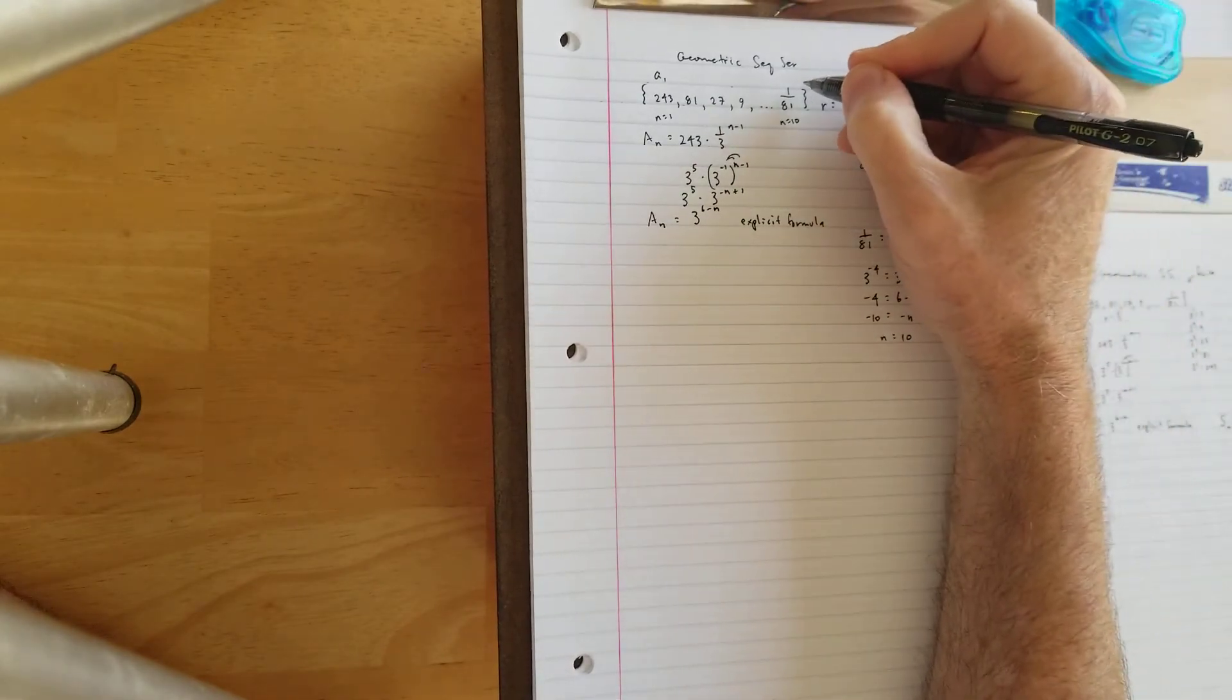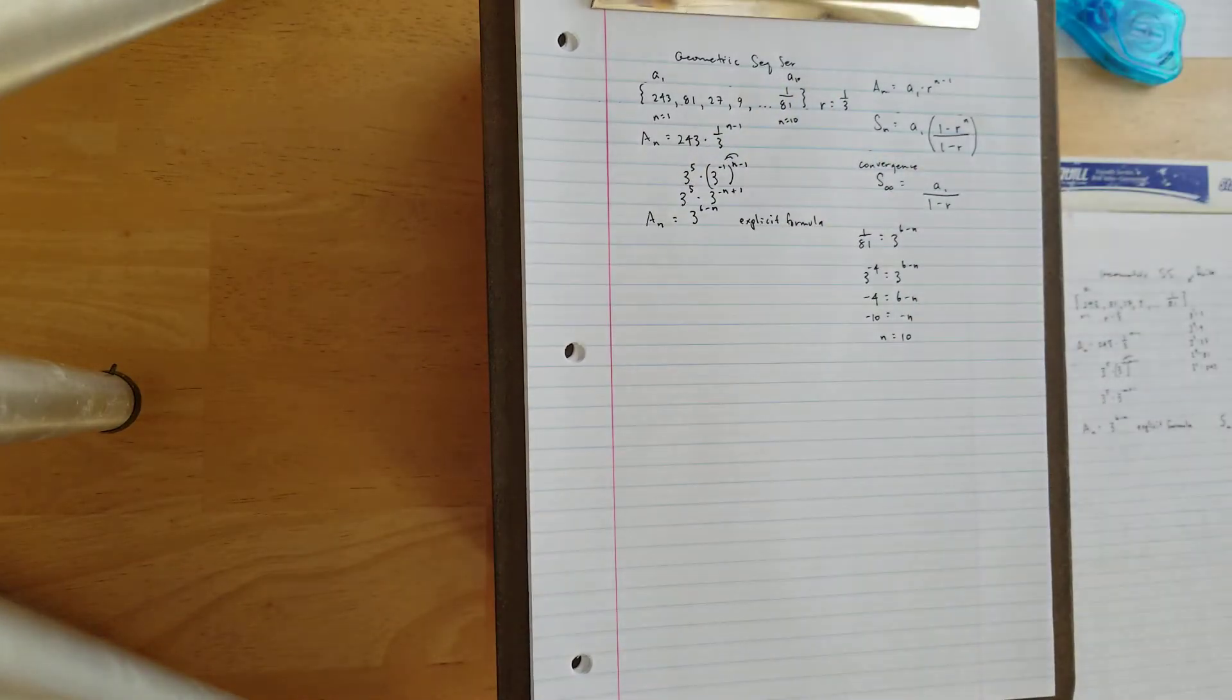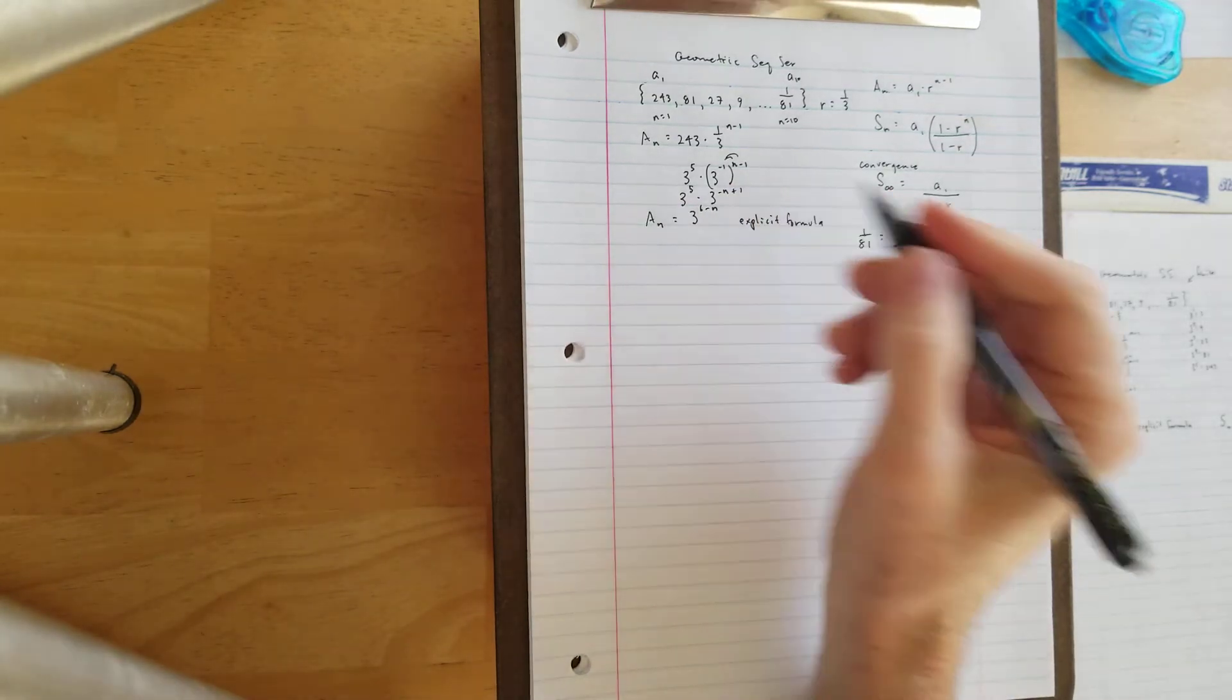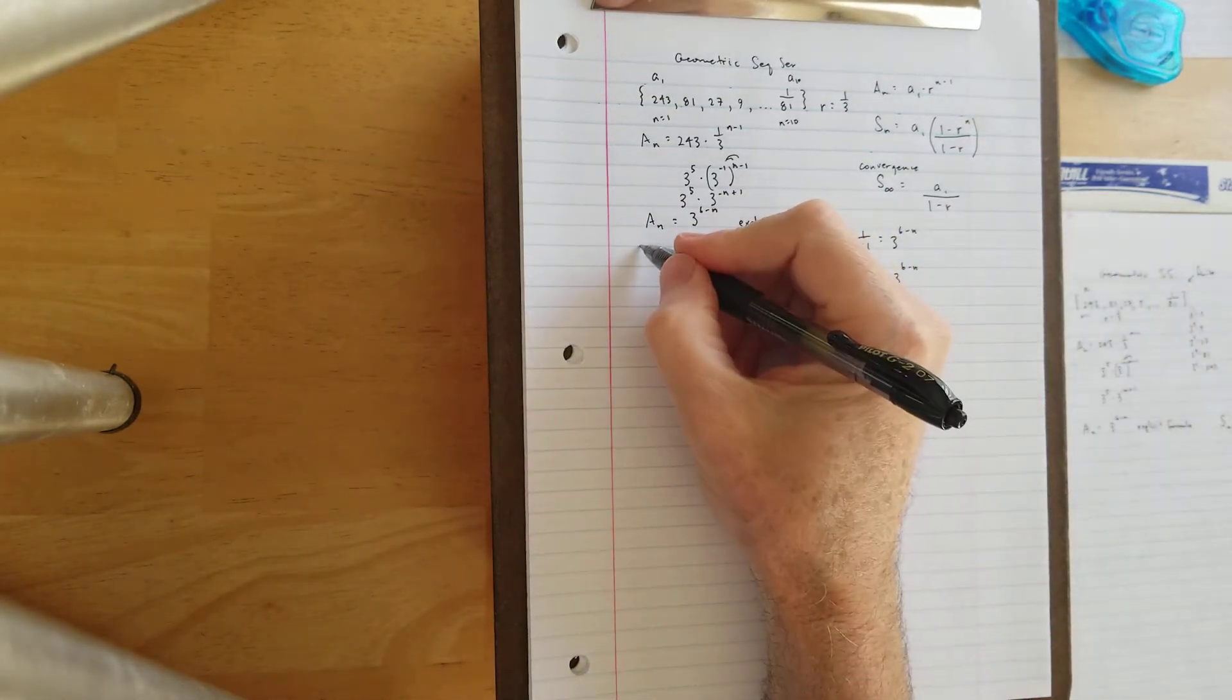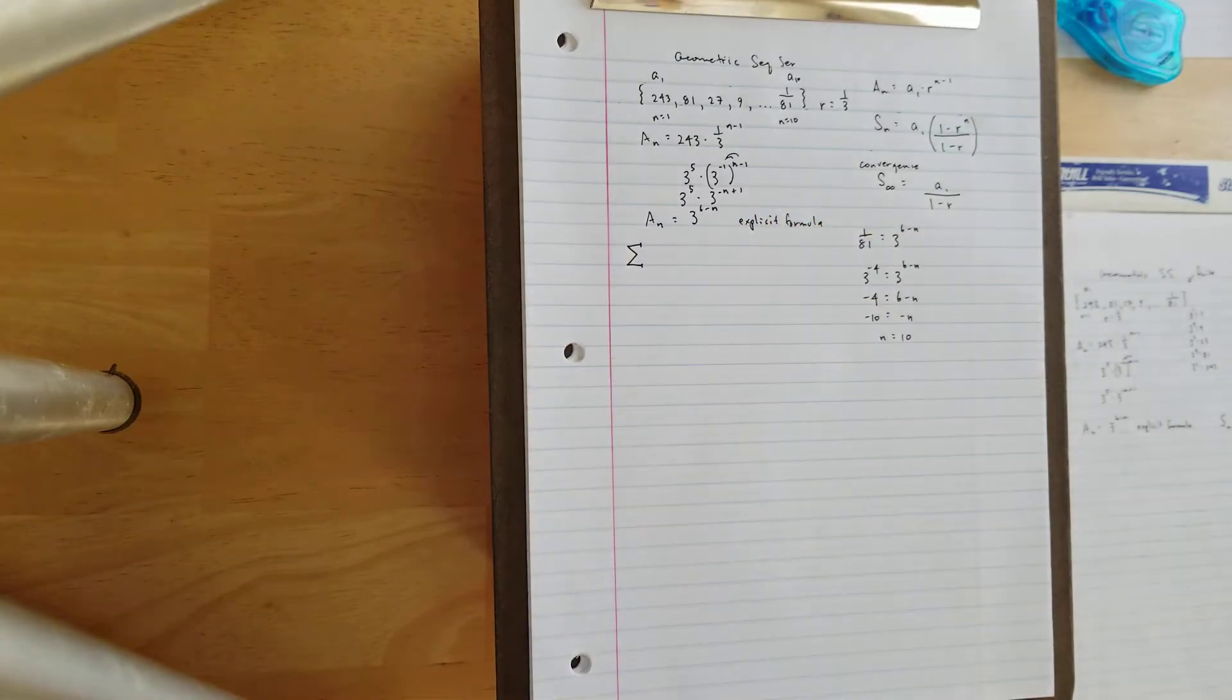So n is 10 for the subscript, and this is the 10th term. Now knowing that information, let's go ahead and put some stuff into sigma notation so we can talk about the geometric example.